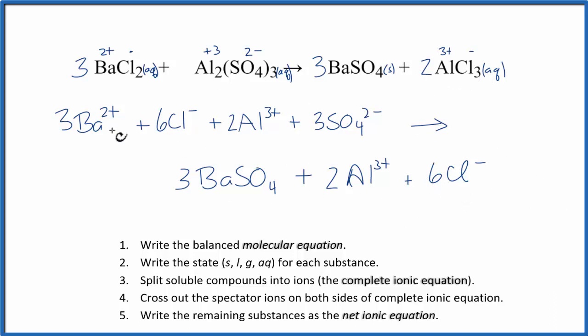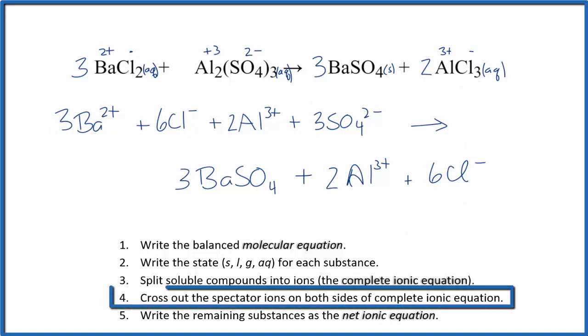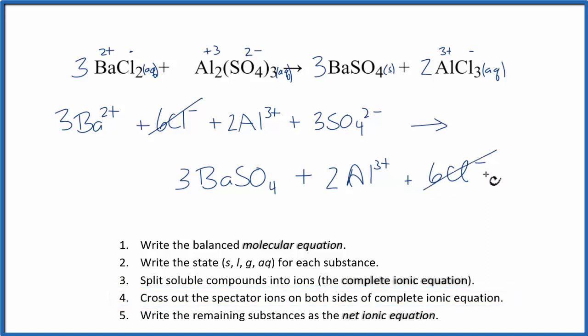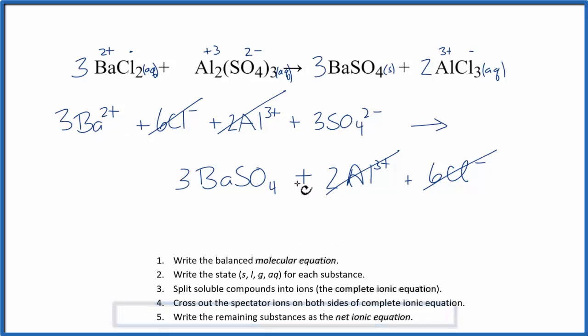We can now cross out spectator ions, ions that are the same on both sides of the equation. I have six chloride ions here and six here on the product, cross it out. I have two aluminum ions here and two aluminum ions here, cross them out. That's the only thing I can cross out. Now I can write the reactants and products that are left for the net ionic equation.